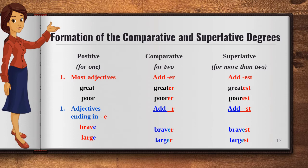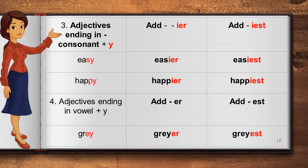For adjectives which end with 'e', in comparative we only add '-r' and in superlative we add '-st'. For example, 'brave' — ending with 'e' — becomes 'braver' (B-R-A-V-E-R) in comparative and 'bravest' (B-R-A-V-E-S-T) in superlative. Next, 'large' — again ending with 'e' — becomes 'larger' (L-A-R-G-E-R) in comparative and 'largest' (L-A-R-G-E-S-T) in superlative.